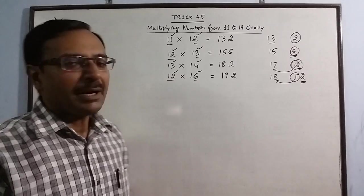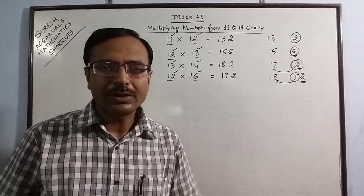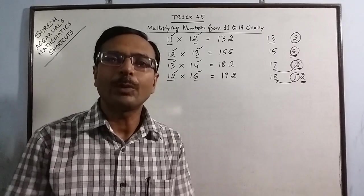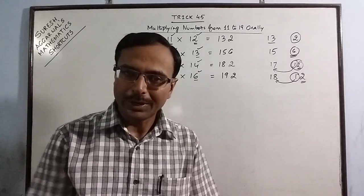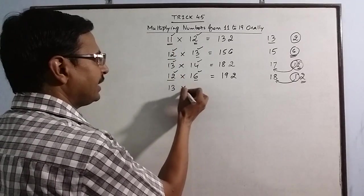Just a matter of 5-6 minutes of practice and you can find all the products of any two numbers from 11 to 19 orally. Let us take some more higher examples. Say we have 13 and 18.